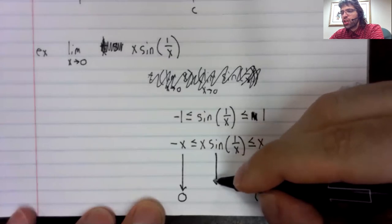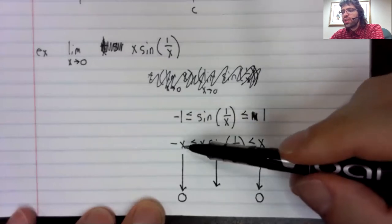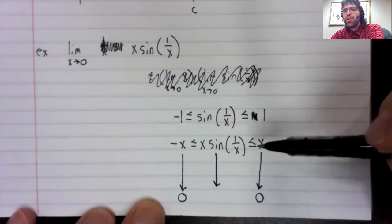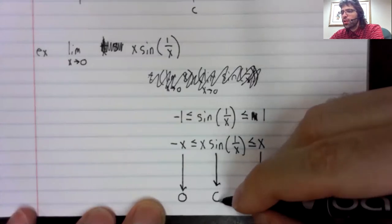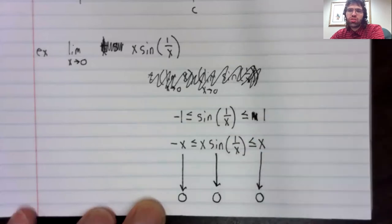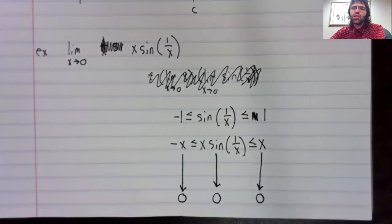So as X goes to 0, this function, which is squeezed between these functions, must also go to 0.